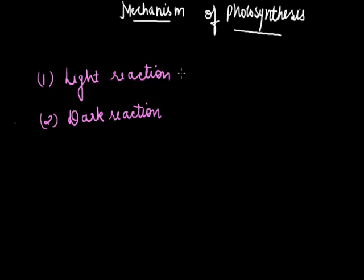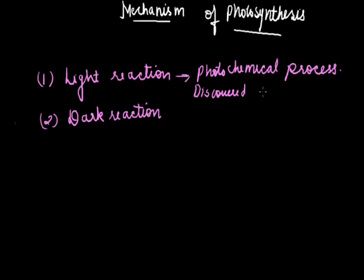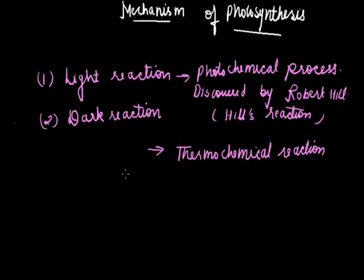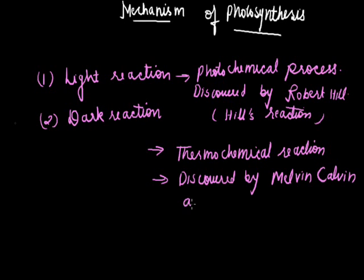Light reaction is also called a photochemical process, and it was discovered by Robert Hill. On the other hand, dark reaction is called a thermochemical reaction. It was discovered by Melvin Calvin and Benson. Therefore, it is also called the Calvin Cycle.